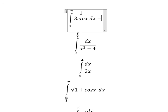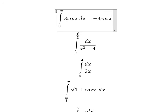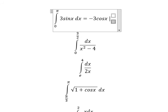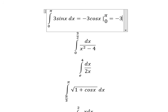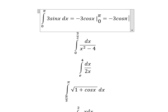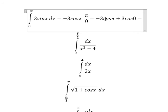The integration of sine x gives us negative cosine x. I will put the bounds from 0 to π. And now we have the final answer. We calculate this one and we have number 6.